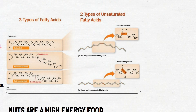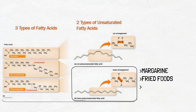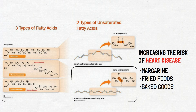Finally, we have trans fats. Trans fats are the unhealthiest form of fats. They are found in foods such as margarine, fried foods, and baked foods, and are known to increase LDL cholesterol and decrease HDL cholesterol, increasing the risk of heart disease. A person should limit intake of saturated fatty acids and trans fats to as little as possible.